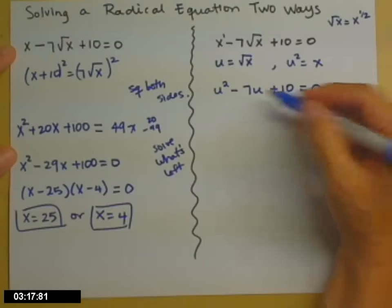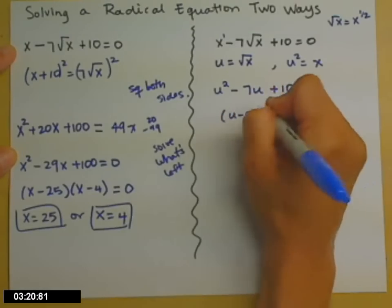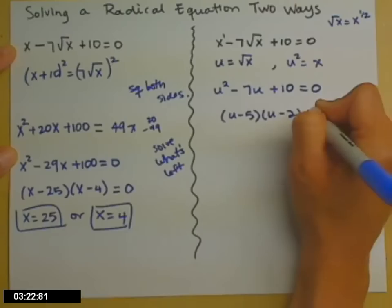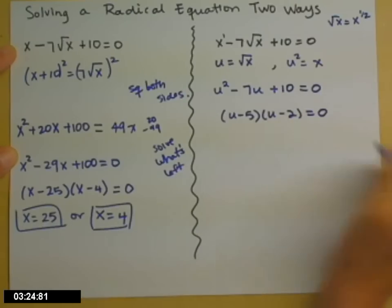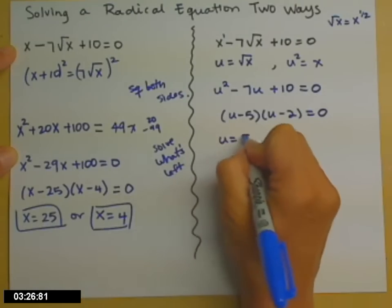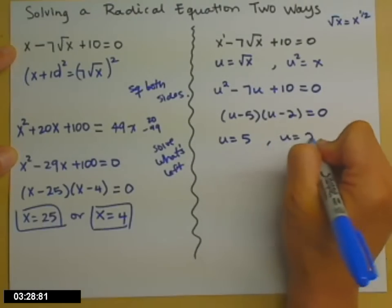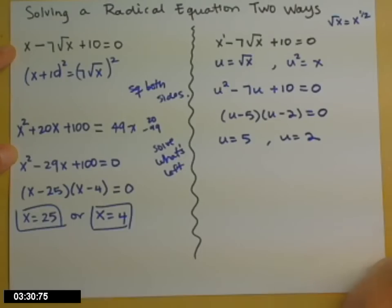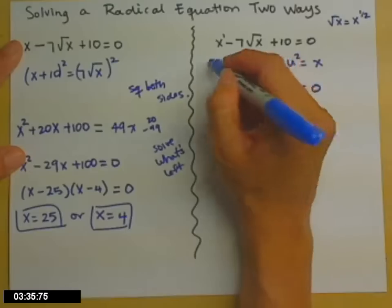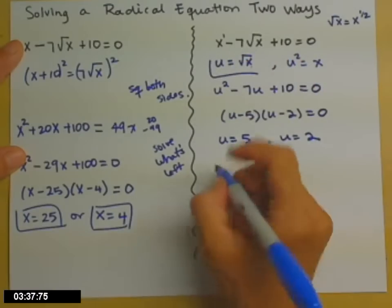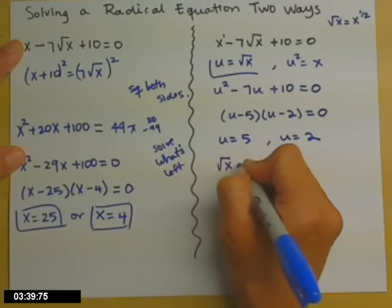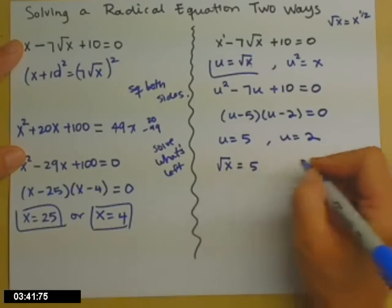Factors of 10 that add to give 7, so u minus 5 times u minus 2 gets us our answers of u equals 5 and u equals 2. And we could be done if anyone asked us about u's, but they asked us about x's. So come back up here to your substitution. u is the same thing as the square root of x. So the square root of x equals 5, or the square root of x equals 2.